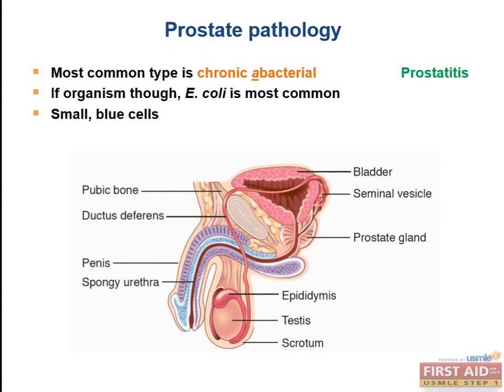The USMLE wants you to know that prostatitis is most commonly chronic abacterial. They'll ask directly: what's the most common type? Choices are acute bacterial, chronic bacterial, or chronic abacterial — and the answer is chronic abacterial. If an organism is involved, it's E. coli — the gram-negative rod, fast lactose fermenter — the same organism causing UTIs.